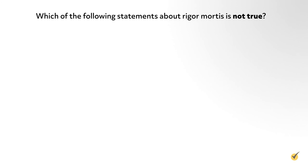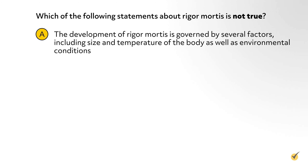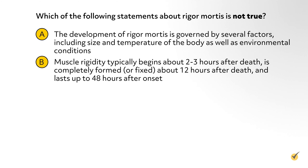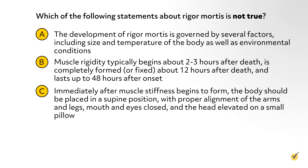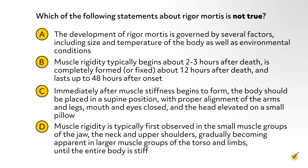Let's go over a few review questions before we go. Number one: which of the following statements about rigor mortis is not true? A: the development of rigor mortis is governed by several factors including the size and temperature of the body as well as environmental conditions. B: muscle rigidity typically begins about two to three hours after death, is completely formed about 12 hours after death, and lasts up to 48 hours after onset. C: immediately after muscle stiffness begins to form, the body should be placed in a supine position with proper alignment, mouth and eyes closed, and the head elevated on a small pillow. Or D: muscle rigidity is typically first observed in the small muscle groups of the jaw, neck, and upper shoulders, gradually becoming apparent in large muscle groups of the torso and limbs until the entire body is stiff. The correct answer is C.